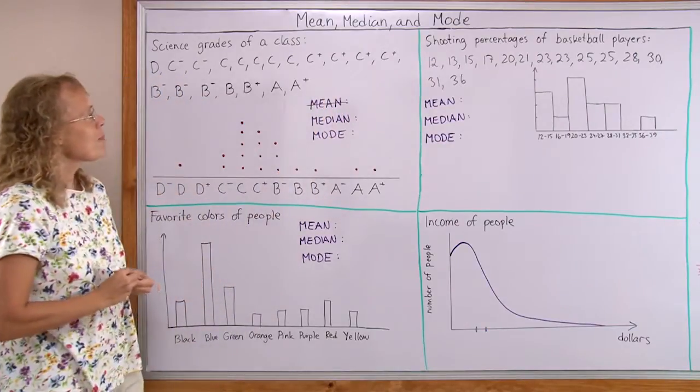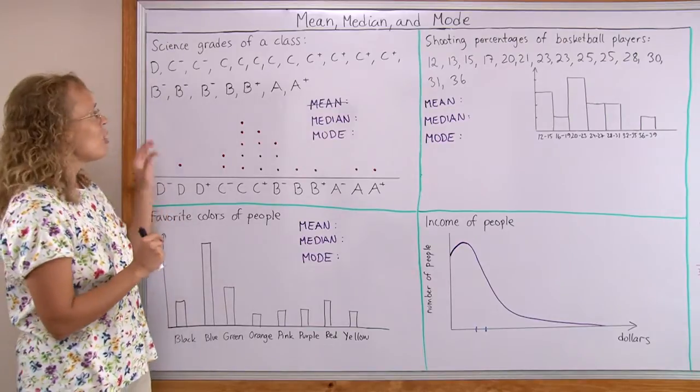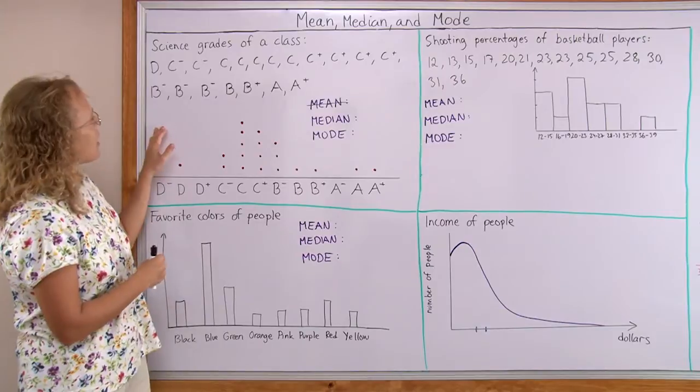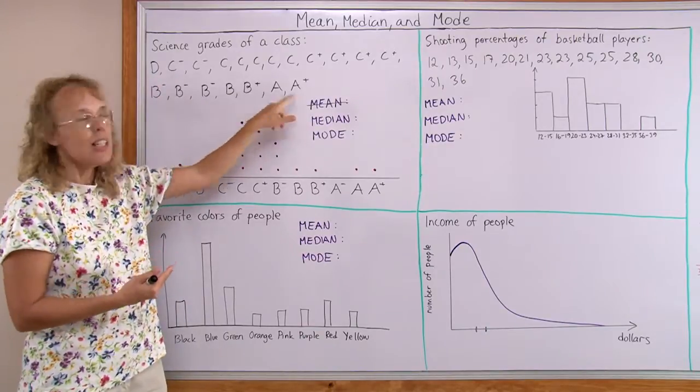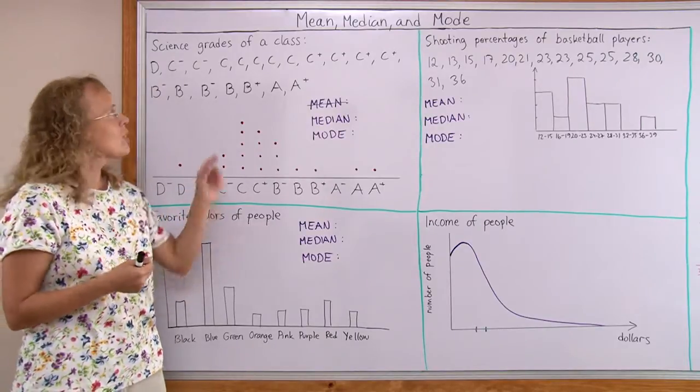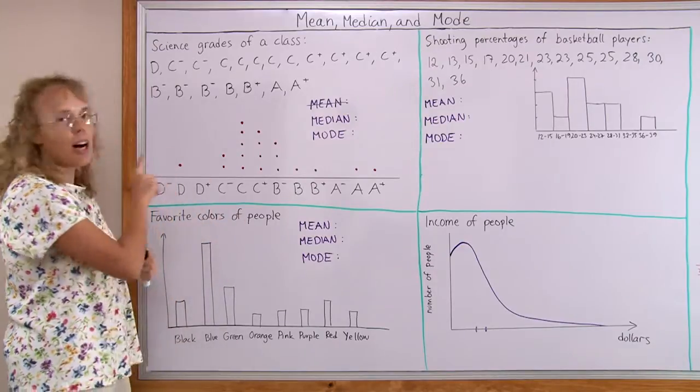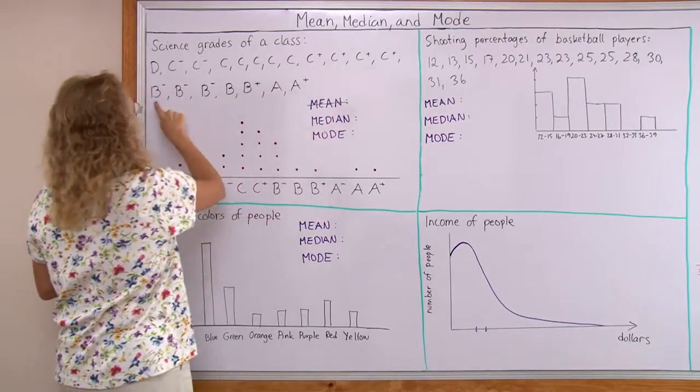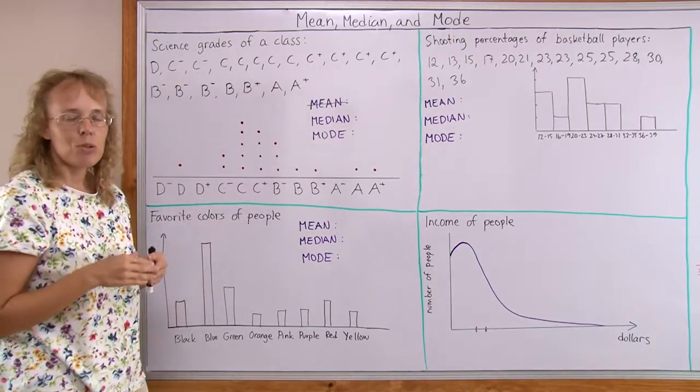Median is the middlemost number once you have organized your data from smallest to greatest. This data can be organized - this is definitely the least and this is the greatest. So now we can check what is the middlemost value. First I need to count how many values there are. 2, 3, 4, 5, 6, 7, 8, 9, 10, 11, 12, 13, 14, 15, 16, 17, 18, 19. There are 19 values.